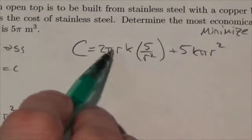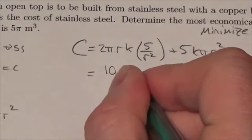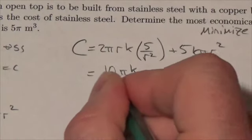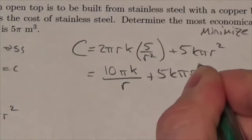And if we simplify this, there's really not a lot of simplification to go here, but I'm going to have r over r². So this is going to end up being 10πk over r plus 5kπr².